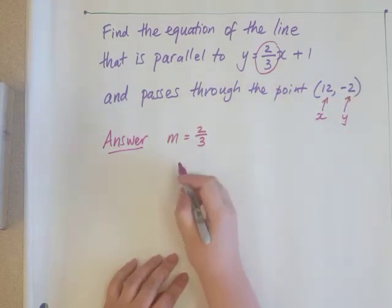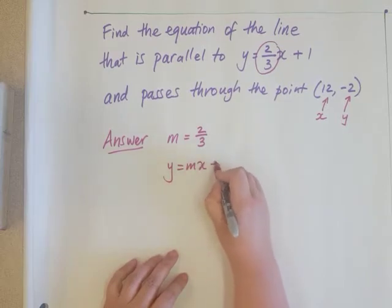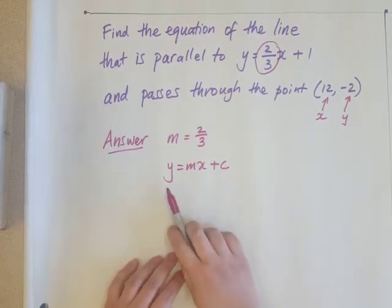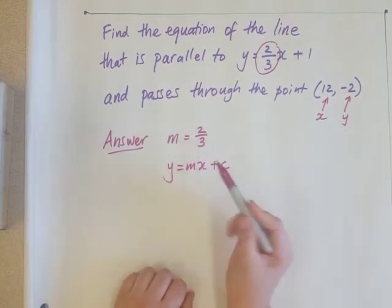Here's our line that we're trying to find. We know that the equation of a straight line is y equals mx plus c. Now, we know that m is 2 thirds.